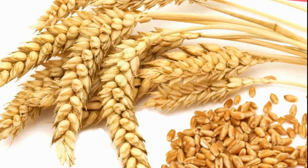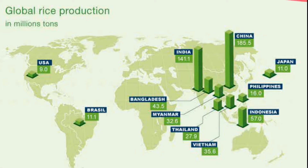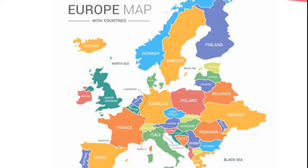Most of the wheat produced in European countries is consumed within the region. Hence, few of these countries export wheat. USA, Canada, Australia and Argentina are the main exporters of wheat. They share three-fourths of the total sales of wheat in the international market. Europe is the major buyer of wheat.